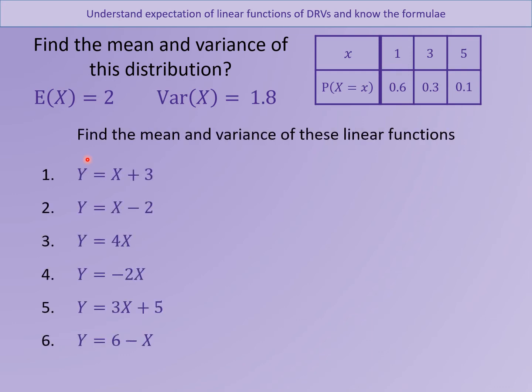Now, using the formula on the previous slide, find the expected value and the variance of Y, where Y is X transformed. So for example, in the first question, instead of X being 1, 3, and 5, because it's X plus 3, the X values will be 4, 6, and 8. Pause the slide now and work out E of Y and variance of Y.